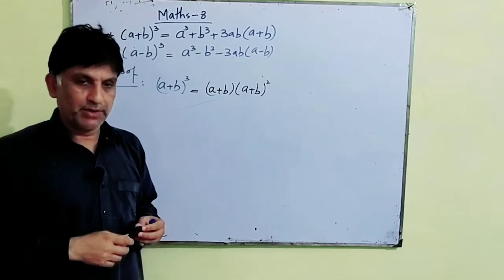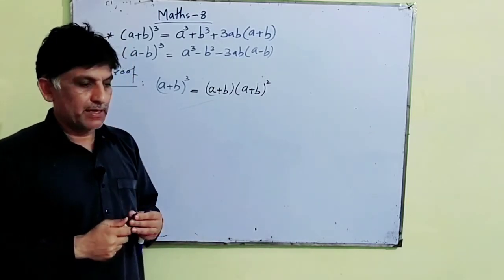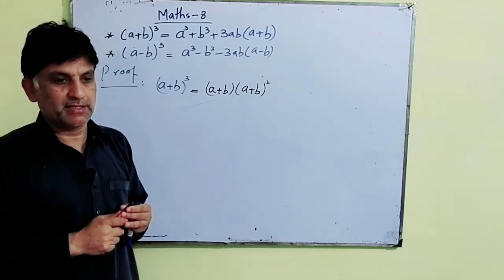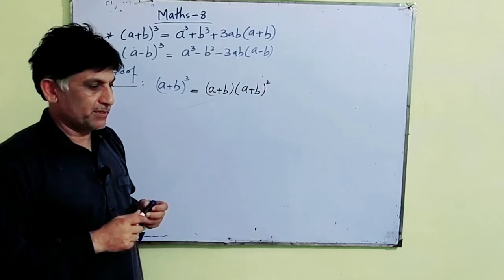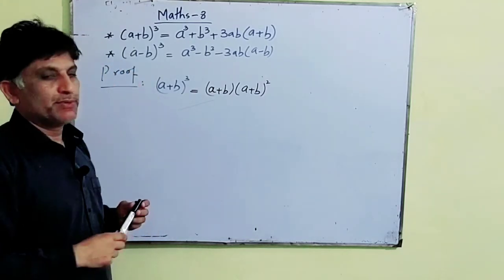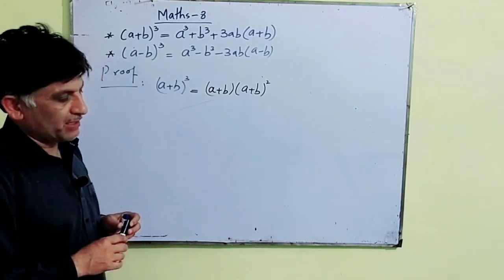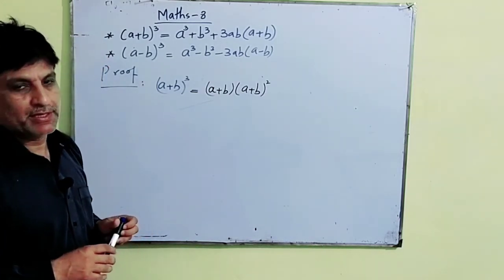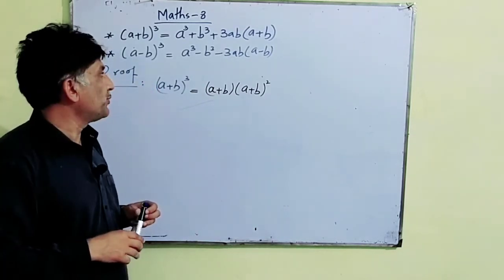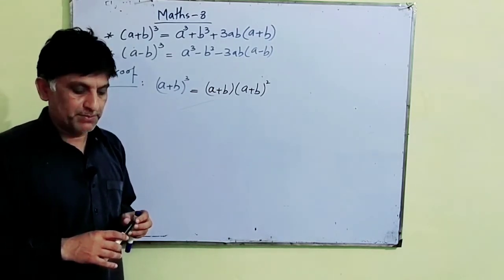Dear students, Assalamu alaikum. Class 8th, with core techniques, core identities, and core formulae. We have (a + b)³ = a³ + b³ + 3ab(a + b). Similarly, (a - b)³ = a³ - b³ - 3ab(a - b).